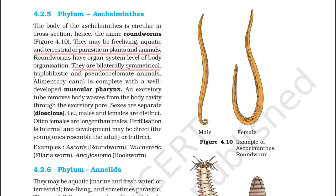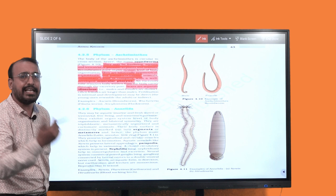The information here: they may be free living aquatic and terrestrial or parasitic in plants and animals. This is the first information. Second one: they are bilateral symmetrical, triploblastic and pseudocoelomate. Third one: alimentary canal is complete with a well-developed muscular pharynx. So all this information is there in these few lines.